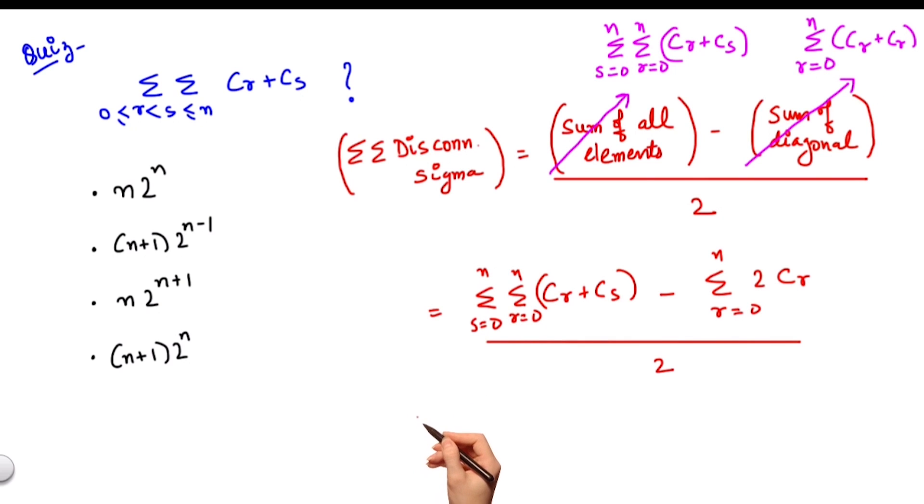We know what the value of the first double summation is. We have already found that earlier. It is equal to n plus 1 times 2 to the power n plus 1.